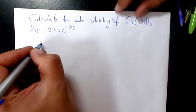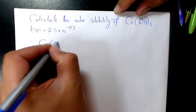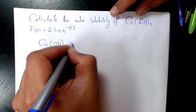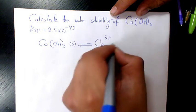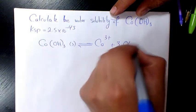So the first thing we need to do, we have cobalt hydroxide, I'm going to say Co(OH)₃ in solid form. When it dissolves it's going to produce cobalt 3+ plus 3OH⁻.